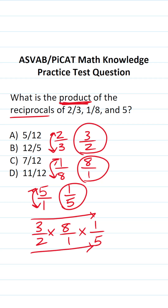Three times eight is 24. Twenty-four times one is 24. Two times one is two. Two times five is ten. So this is going to be 24 over ten.